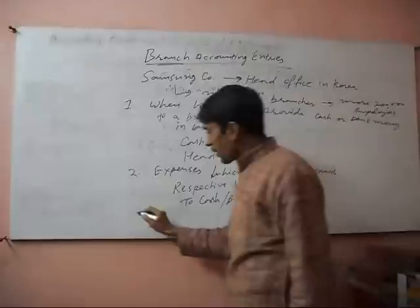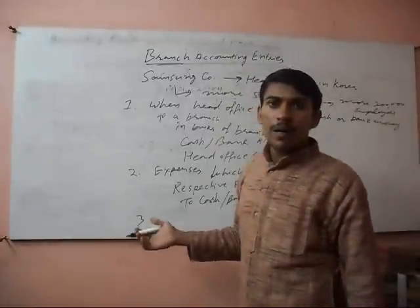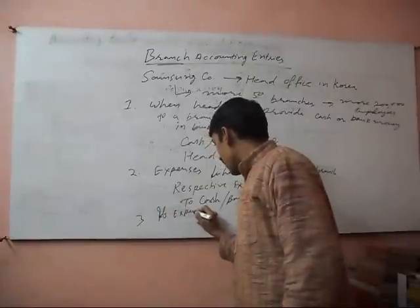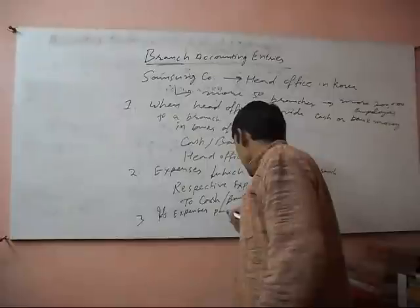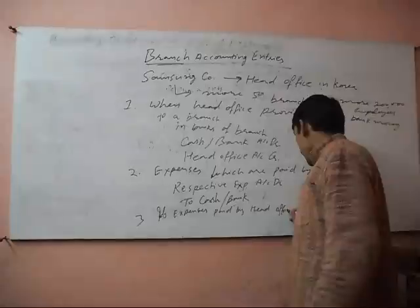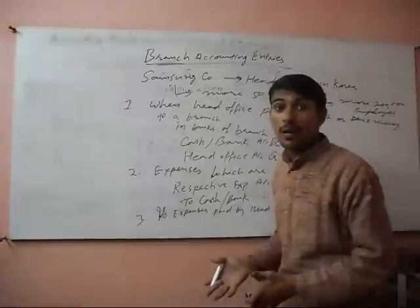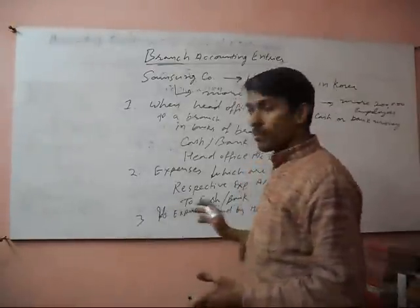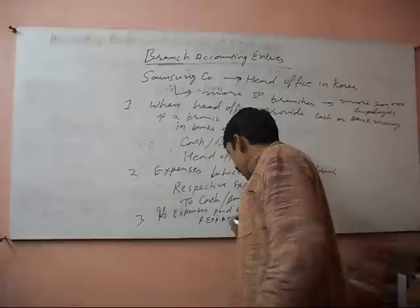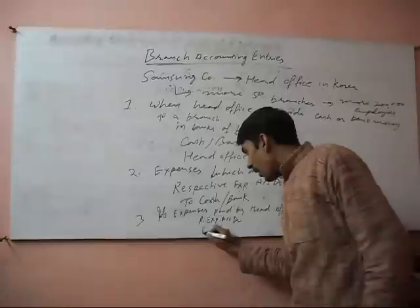Third, if expenses are paid by head office — suppose legal fees of a branch are paid by head office — then in the books of the branch we will pass the entry: Respective Expenses Account debit, to Head Office Account credit.